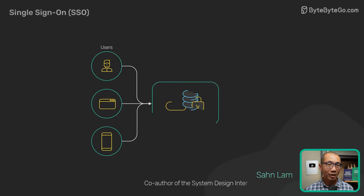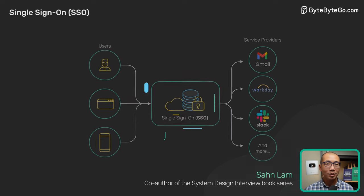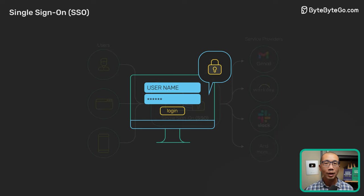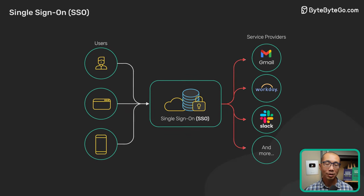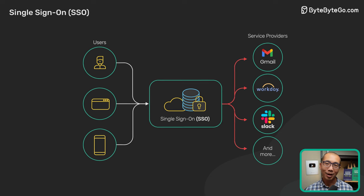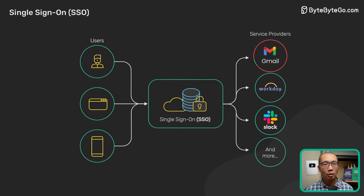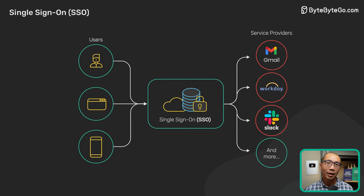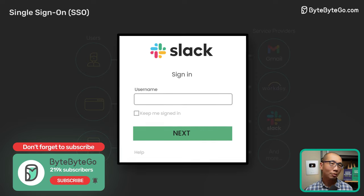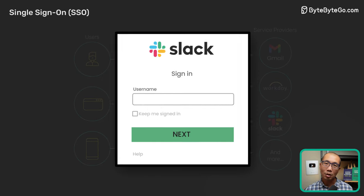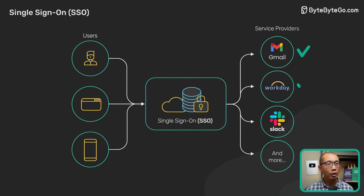What is SSO, or Single Sign-On? SSO is an authentication scheme. It enables a user to securely access multiple applications and services using a single ID. When SSO is integrated into apps like Gmail, Workday, or Slack, it provides a pop-up widget or login page for the same set of credentials. With SSO, a user can access many apps without having to log in each time.